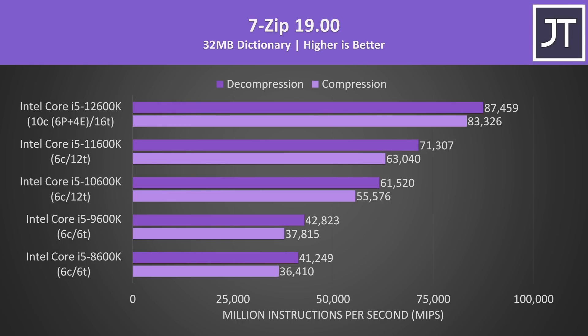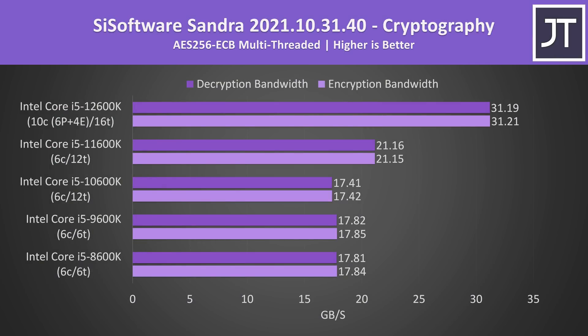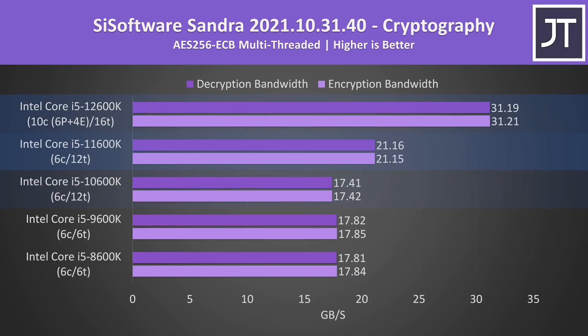7-Zip was used to test compression and decompression speeds — 8th and 9th gen are embarrassingly close. At least 11th gen has some obvious gains over 10th gen, and 12th gen offers decent improvements comparatively. AES encryption and decryption had the biggest improvements with 12th gen: 8th, 9th and 10th gen were all essentially the same, until 11th gen offered a 22% boost, but then 12th gen destroys 11th gen with a 47% boost.